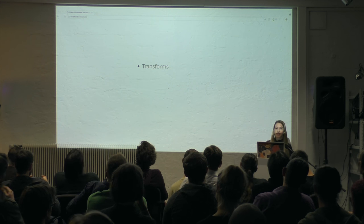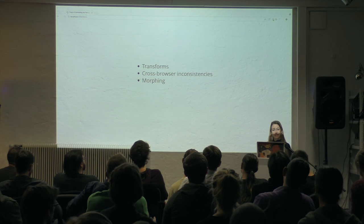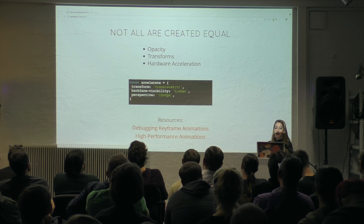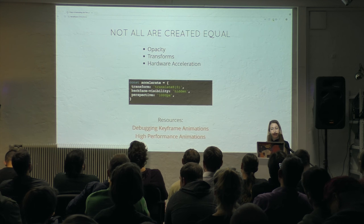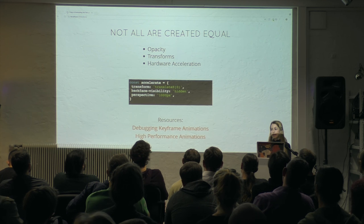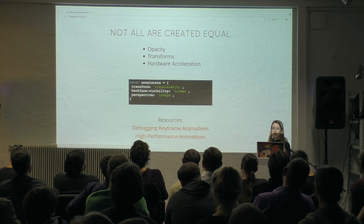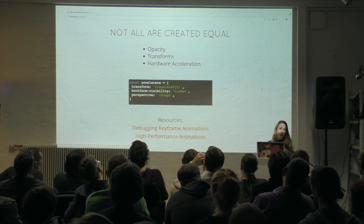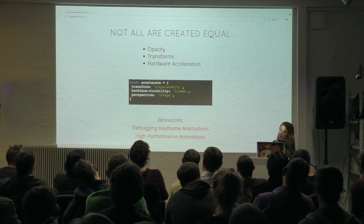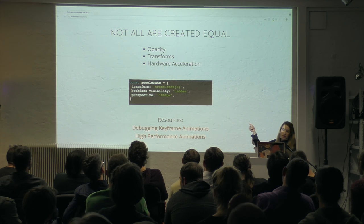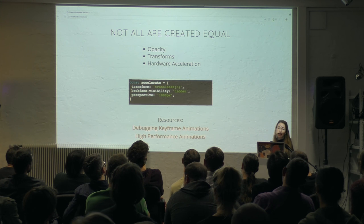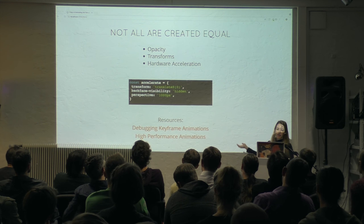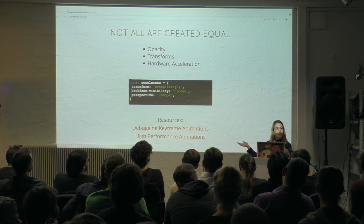To show some of GreenSock's capabilities, we're going to dig into transforms, cross-browser inconsistencies, morphing, and sequencing and chaining. Not all properties are created equal in terms of animation on the web — opacity and transforms cause the least amount of repaints. You shouldn't be moving things with margins; that causes a lot of browser jank. There are ways to hardware accelerate in CSS or with RequestAnimationFrame using properties like the null transform hack — translateZ(0), backface-visibility: hidden, and perspective: 1000. I have resources from the Chrome dev team if you want to know more.